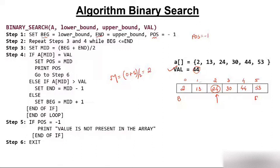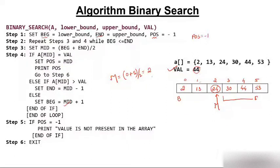Since the element we are searching is greater than the middle value, our search moves to the right — beginning becomes mid+1, which is 3. We check the loop condition: beginning (3) is less than end (5), so we continue. New mid = (3+5)/2 = 4. Now mid points to index 4.